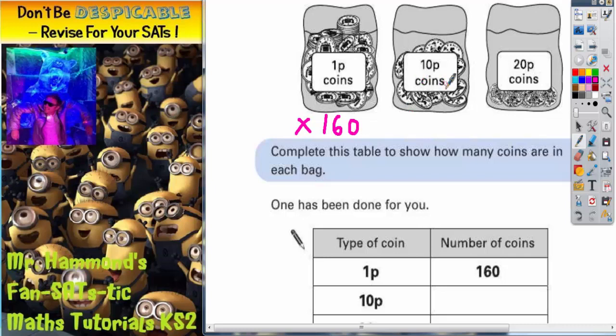How many ten pences would it take to make one pound sixty? Well, you need sixteen of these because ten times sixteen is one hundred and sixty pence. And how many twenty peas would you need to make one pound sixty? Well, you would need eight of these because eight twos are sixteen, so eight twenties are one hundred and sixty pence.